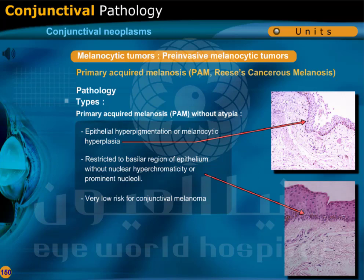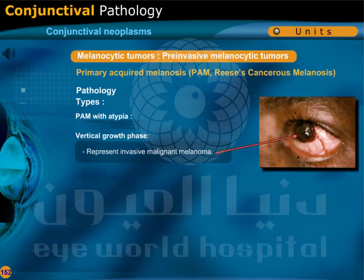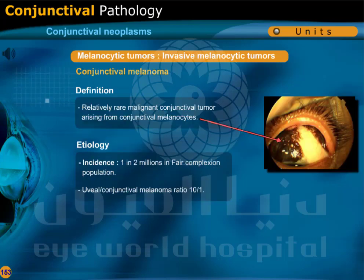Primary acquired melanosis without atypia shows epithelial hyperpigmentation or melanocytic hyperplasia restricted to the basilar region of the epithelium, without nuclear hyperchromaticity or prominent nucleoli, and carries very low risk for conjunctival melanoma. Primary acquired melanosis with atypia involves atypical melanocytic hyperplasia or malignant melanoma in situ involving conjunctival epithelium in 90% of cases, with high risk for developing conjunctival melanoma: 20% if atypical melanocytes are confined to the basilar part of the epithelium, 75% if PAM contains epithelioid cells, and 90% if intraepithelial pagetoid spread is present. Atypical cells confined to the epithelium constitute the radial growth phase, while vertical growth phase represents invasive malignant melanoma.